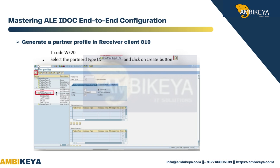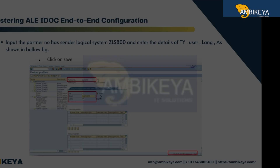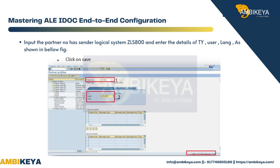Generate partner profile in receiver client 810. Input the partner number as sender logical system ZLS800, and enter the details of type, user, and language as shown in the figure below.